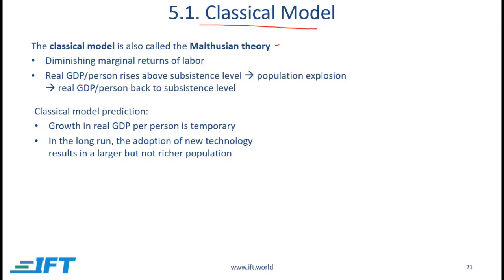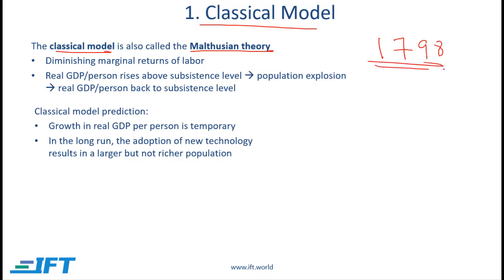Let's start with the classical model. The classical model is also called the Malthusian theory because it was developed by Thomas Malthus. Malthus came up with this theory in 1798, which was more than two centuries ago, and at that point economies were primarily farming based.